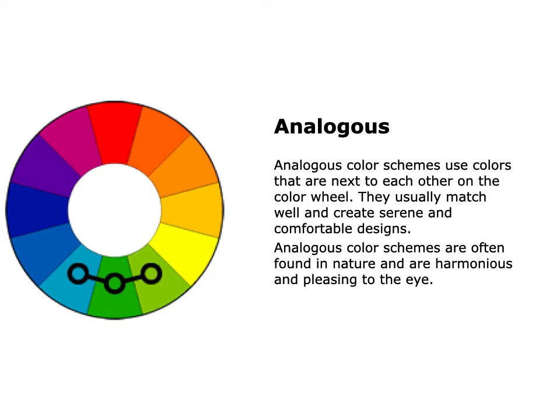Next, a color scheme we're going to talk about is analogous. Analogous is a color scheme where all the colors are right next to each other on the color wheel. They match well and create serene, comfortable designs — they're considered harmonious and pleasing to the eye. If you consider yourself a calm, even-keel person, you might consider an analogous color scheme. Here's an example by Mark Rothko.